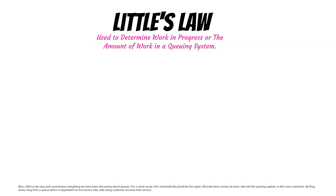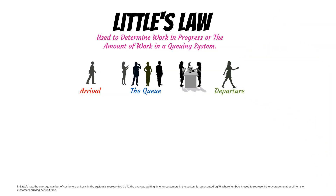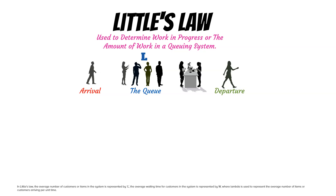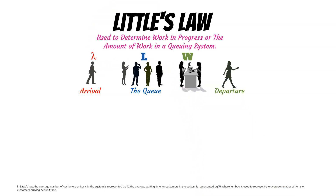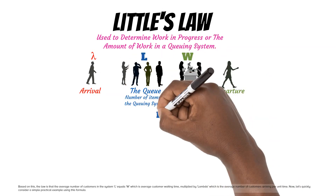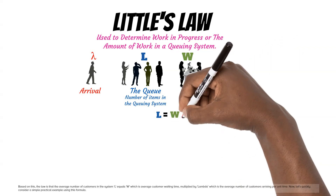For a quick recap, let's schematically illustrate this again. Discrete items arrive at some rate into the queuing system — in this case, customers. As they arrive, they form a queue dependent on the service rate until every customer receives their service. In Little's Law, L represents the average number of customers or items in the system, W represents the average waiting time for customers in the system, and Lambda (λ) represents the average number of items or customers arriving per unit time. The law states: L = W × λ, meaning the average number of customers in the system equals average customer waiting time multiplied by the average number of customers arriving per unit time.